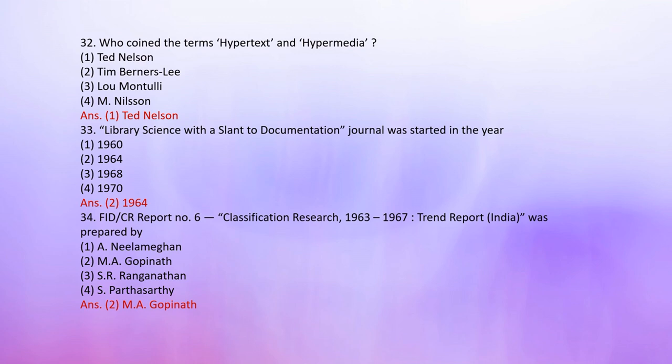Number 35: FID/CR Report No. 6, Classification Research 1963–1967, Trend Reports India, was prepared by: 1. E. Lamegan, 2. M.A. Kapinath, 3. S. Ranganathan, 4. T.S. Parthasarathi. The correct answer is 2: M.A. Kapinath.